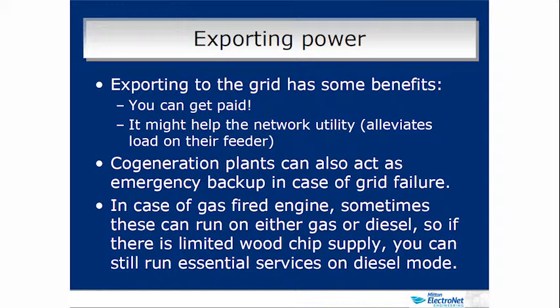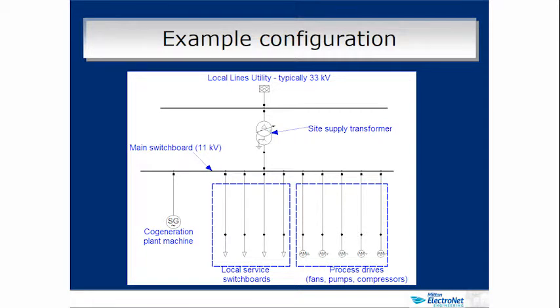Now for the generation and electrical side of things at a high level. When it comes to connecting electrical generation, the easiest option is to make sure your generator is sized less than the output of your plant. If you have a 5 megawatt plant at minimum demand, and your generator is sized less than 5 megawatts, you ensure that you're never exporting to the grid. Avoiding export keeps the network utility happy — the regulatory hurdles for connecting equipment that exports to the grid are higher.